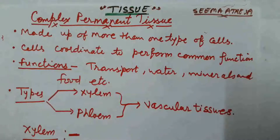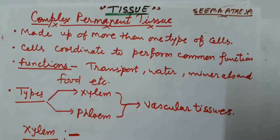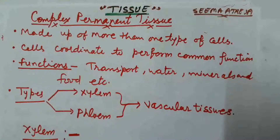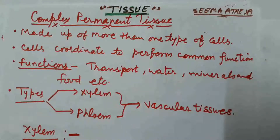Meristematic tissue are of three types: apical meristem, intercalary meristem, and lateral meristem. We already discussed all of these in previous lectures. We also discussed permanent tissue and its types — simple permanent tissue and complex permanent tissue. Simple permanent tissue we already discussed. So today we are going to start our topic: complex permanent tissue.